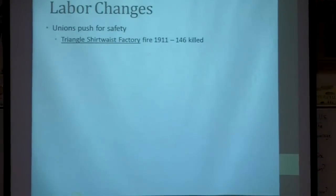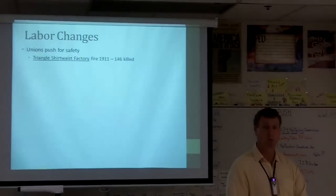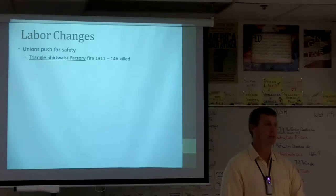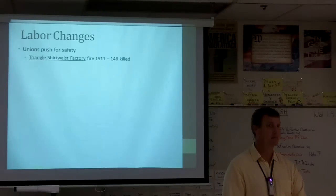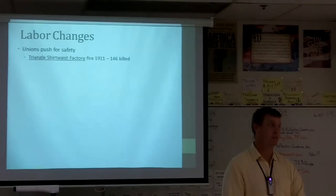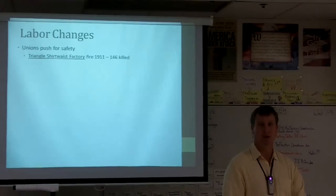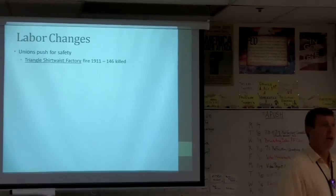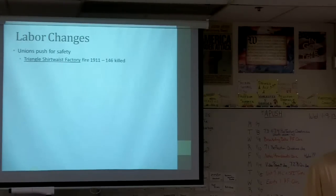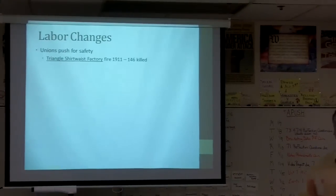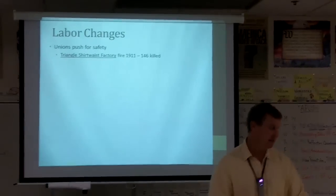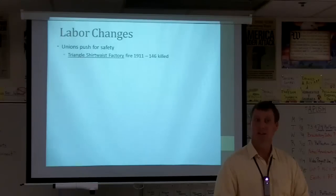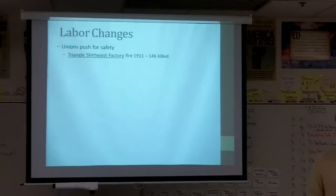Labor changes — just saw that video about the Triangle Shirtwaist Factory. Unions were pushing for these changes. Do you think it helped that not only were a lot of people killed, but there were a lot of young women? If it would have been a bunch of old immigrant men, do you think there would have been much uproar? But if it's a lot of teenage girls with their whole lives ahead of them — and they had doors locked so the women couldn't go out other exits. Why did they lock them? So they couldn't steal. So some exits were locked up to check workers on the way out. We would have safety features pushed about as a result.